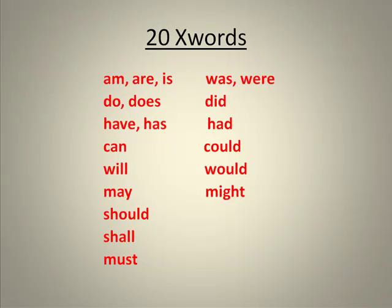The first thing we need to see is what exactly are the X words. Very often we call them helping verbs or auxiliary verbs. There are 20 really popular ones, and here you can see them. They're divided into two groups: am, are, is — that group is tied with the present. The other side — was, were, did — have more connection to the past. But these are the 20 X words, and let's see how we can use them to help us find the subject of a sentence.